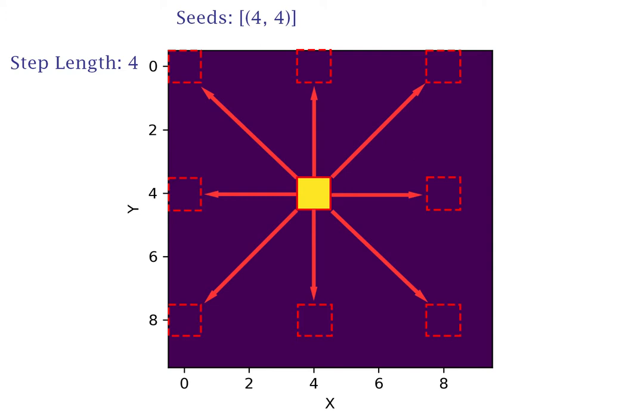It can begin at one and double after every pass, or it can start at a larger number, such as half the dimensions of the grid, and half after every pass.